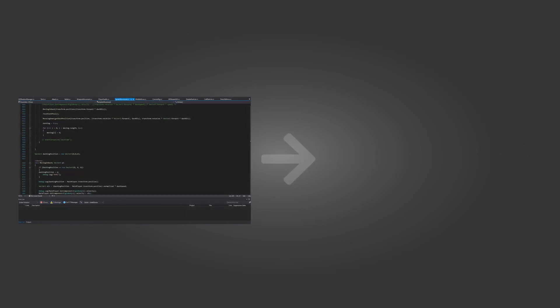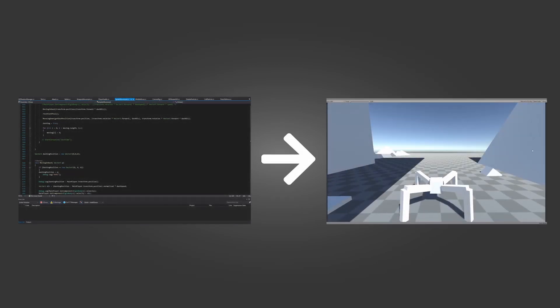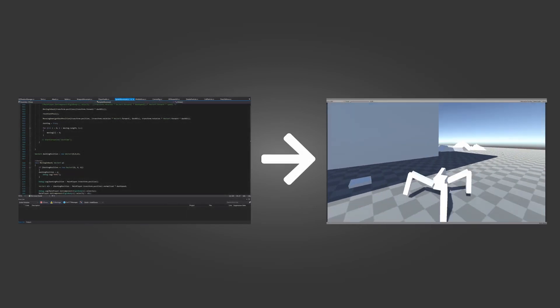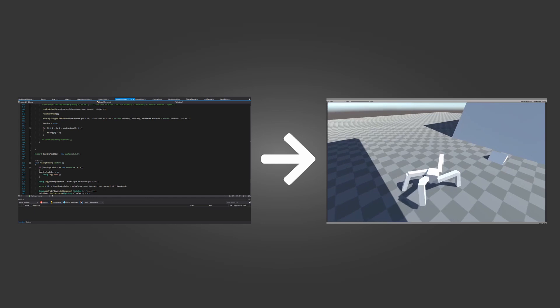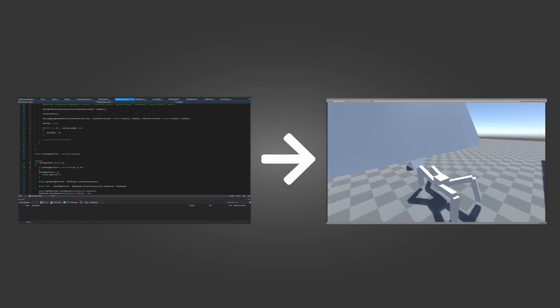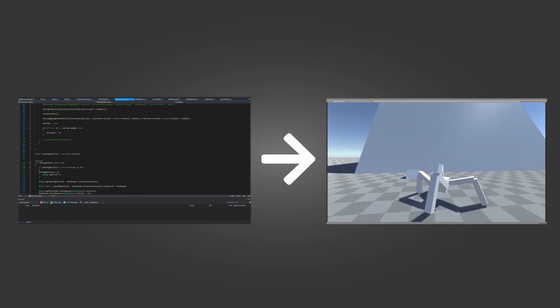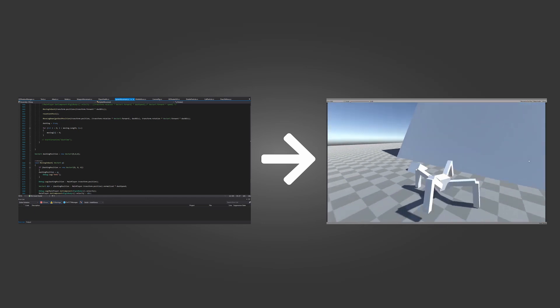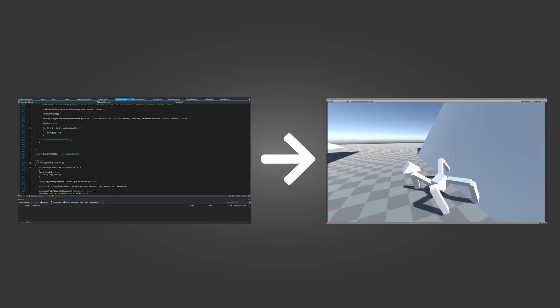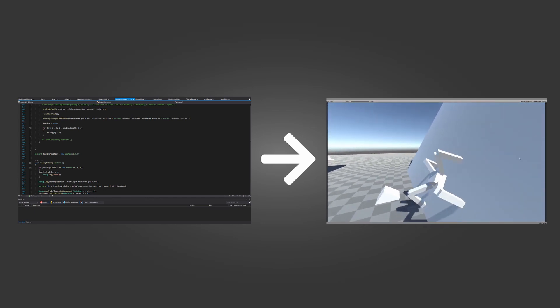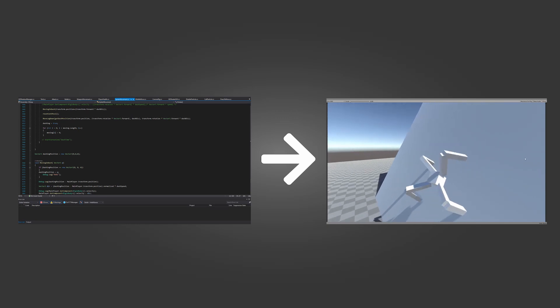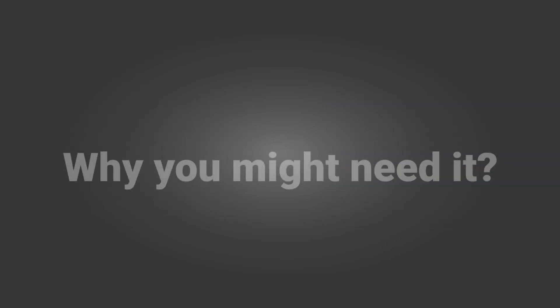So what exactly is procedural animation? This is an animation that is driven by code, so you have full flexibility to change the animation in a specific situation in the game, or when the player interacts at a specific position in your game environment.